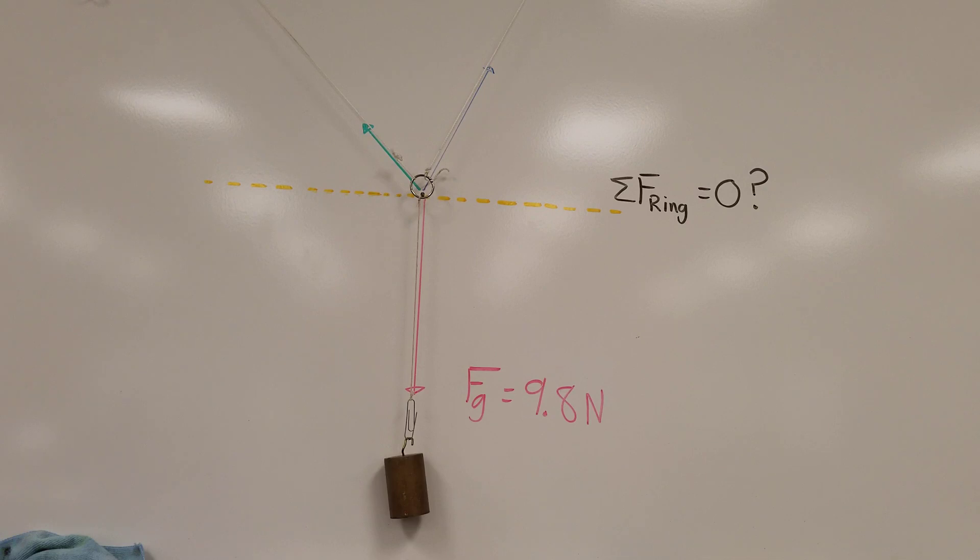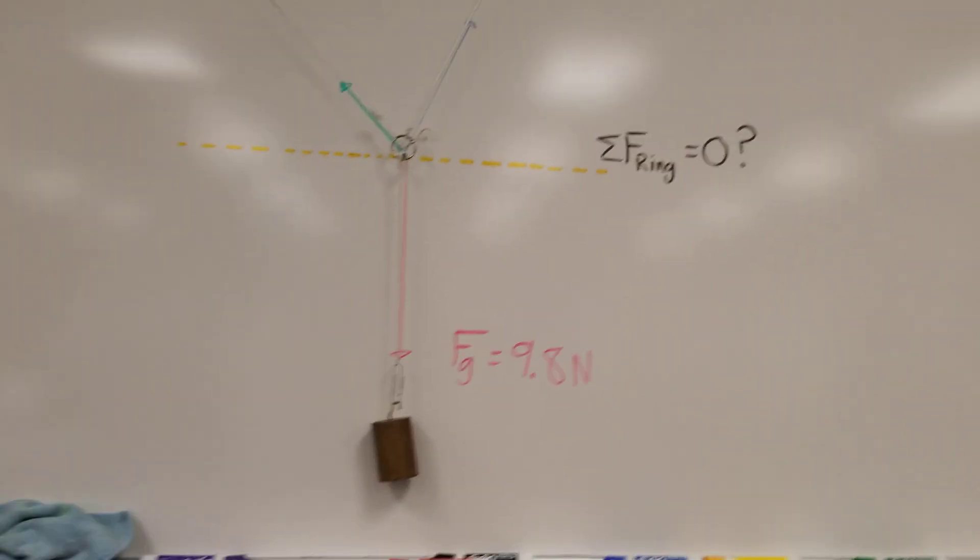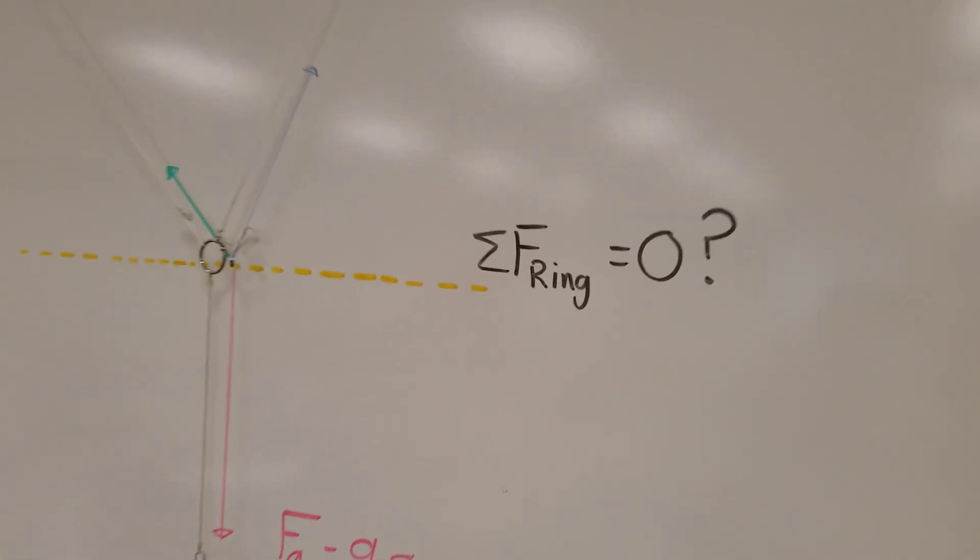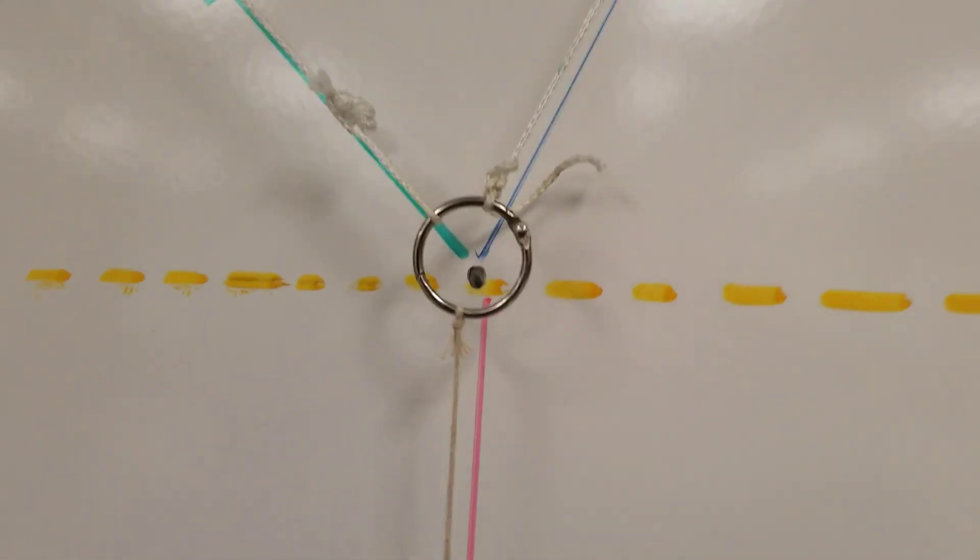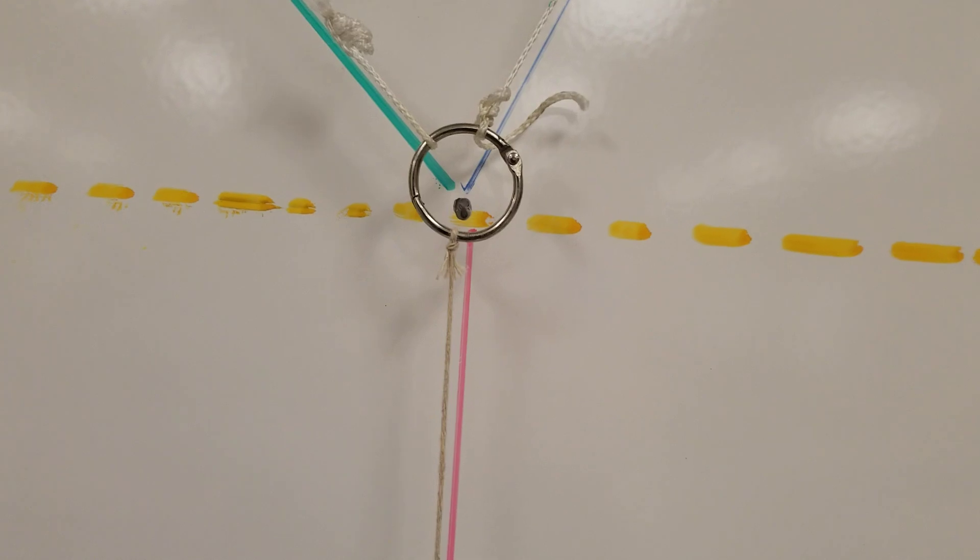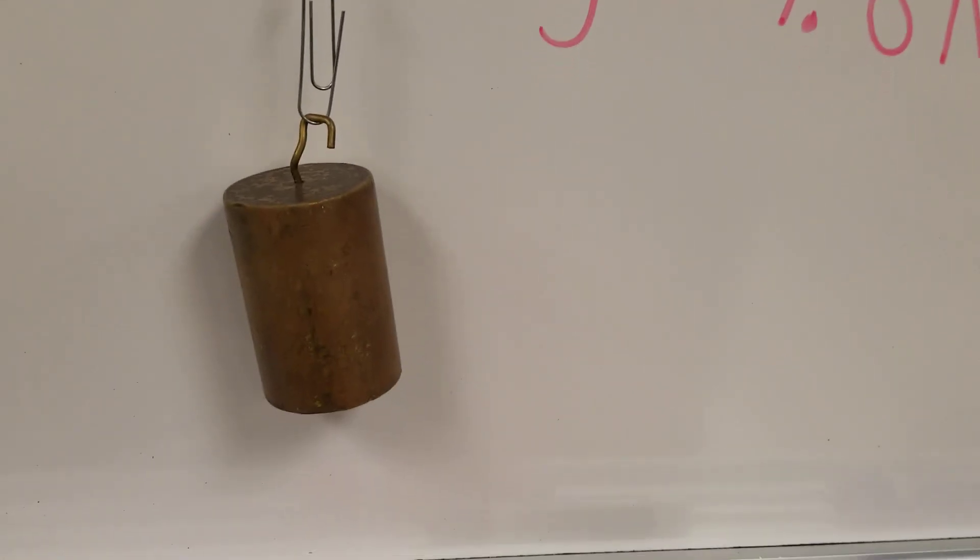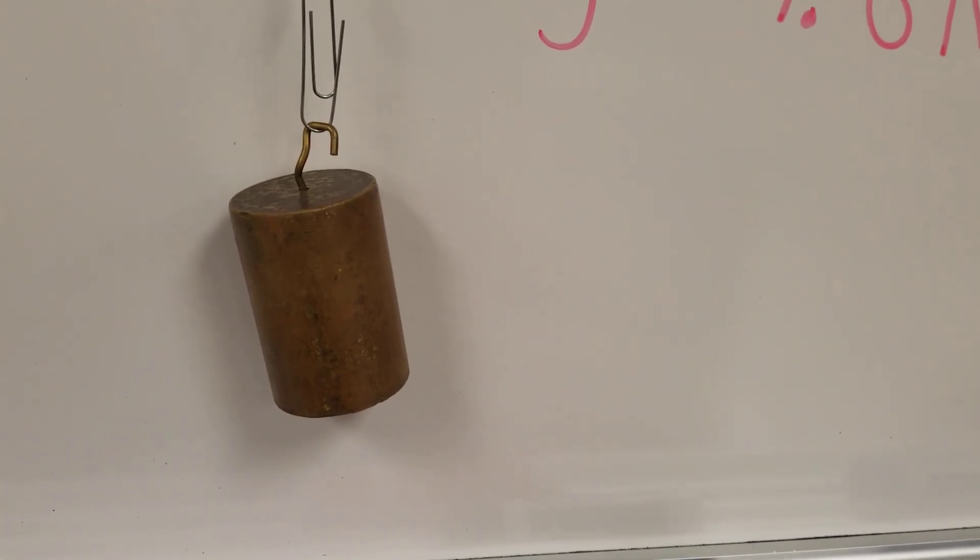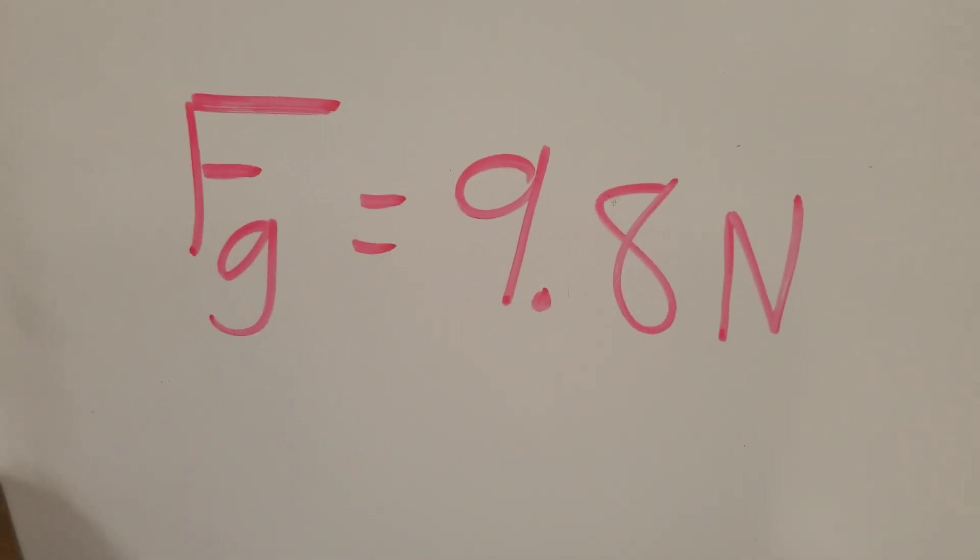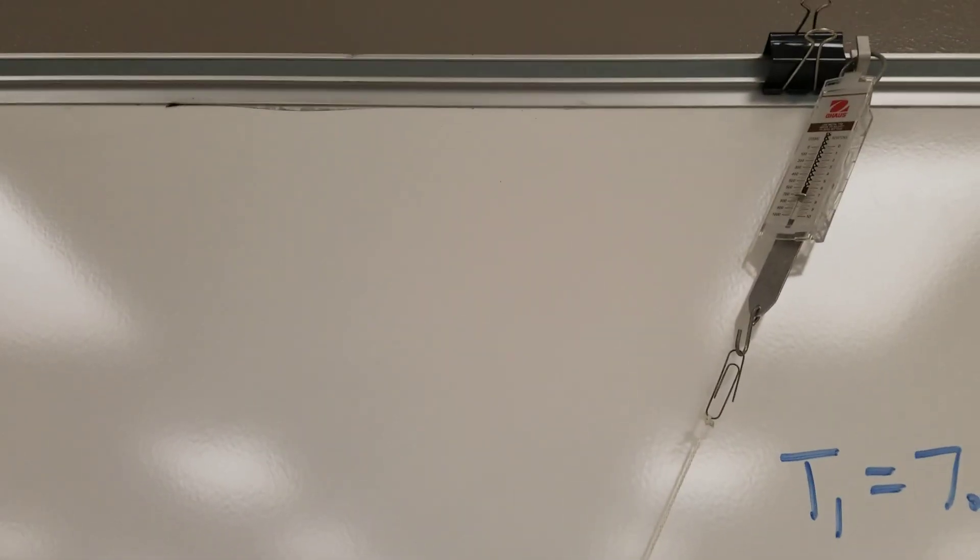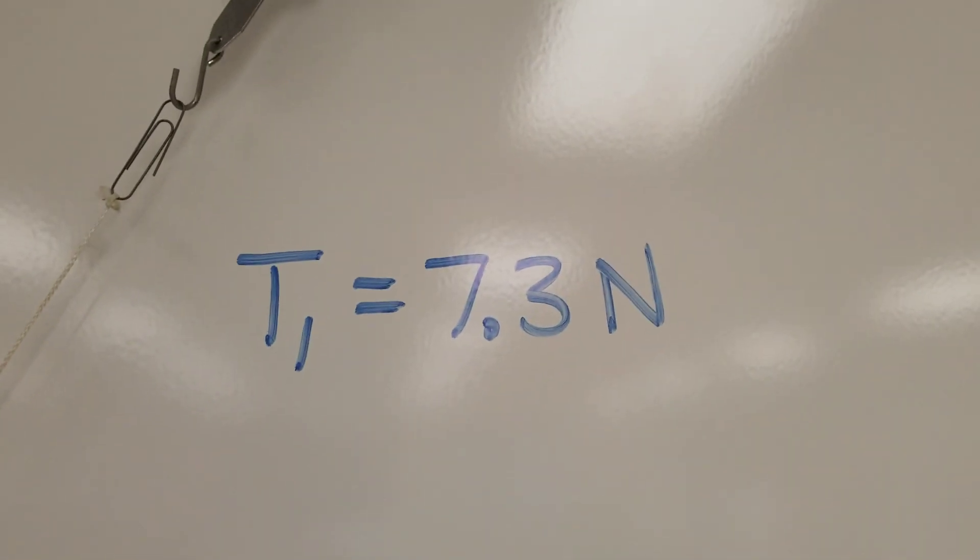I've got an example up here on the whiteboard. I've got a ring, just like a little binder ring. And then from that ring are three strings. One string is attached to this weight which is a one kilogram weight, meaning it's got a weight of 9.8 Newtons. And then the other two strings are attached to spring scales at the top of my whiteboard. One spring scale is reading 7.3 Newtons and the other one is reading 4.5 Newtons.